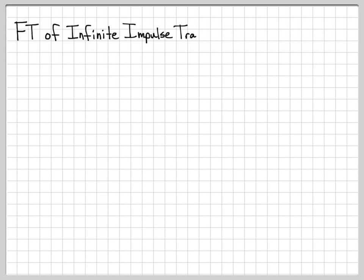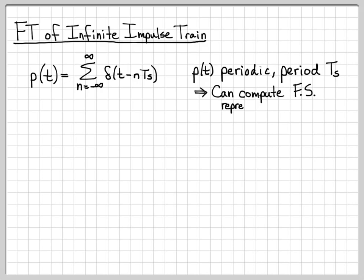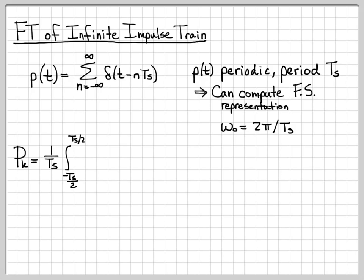We want the Fourier transform of the infinite impulse train. p of t is an infinite collection of time-shifted impulses. p(t) is periodic with period T_s — it just repeats forever in the time domain. Since this is a periodic signal, we represent it in the frequency domain using its Fourier series. Its fundamental frequency is ω₀ = 2π / T_s.